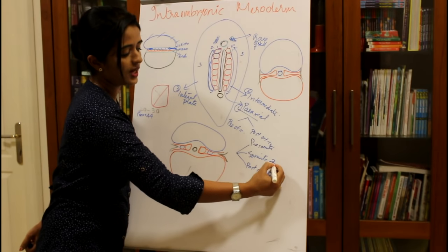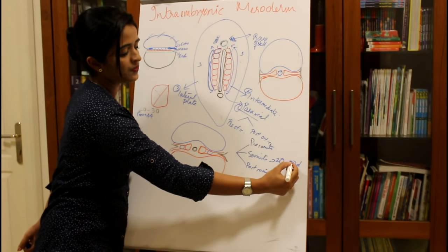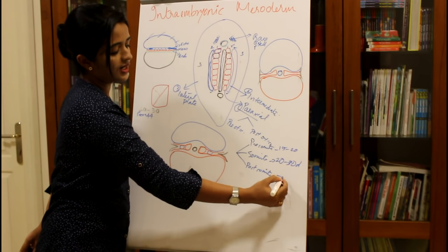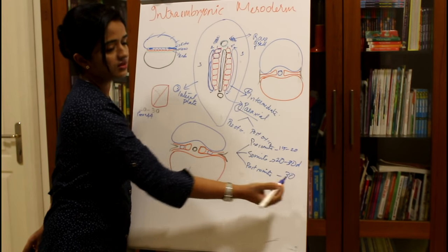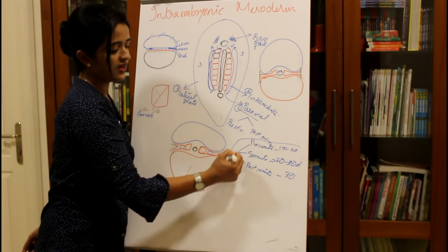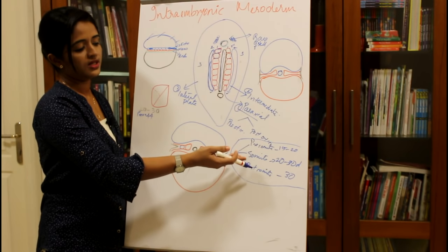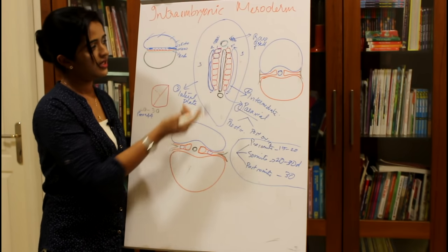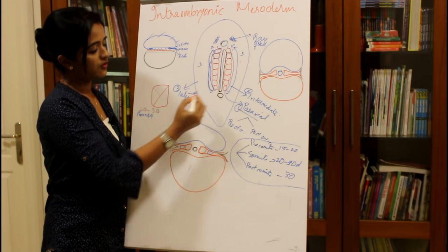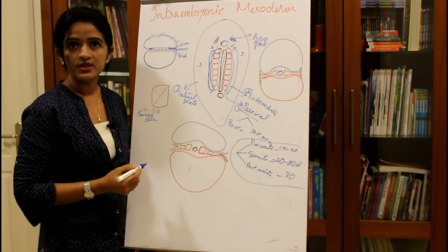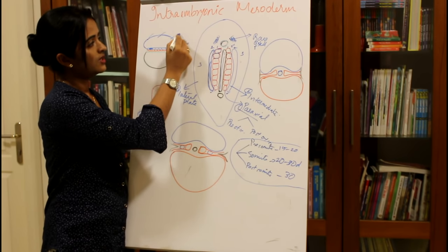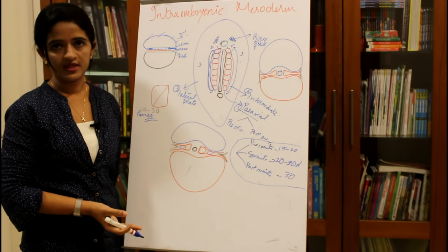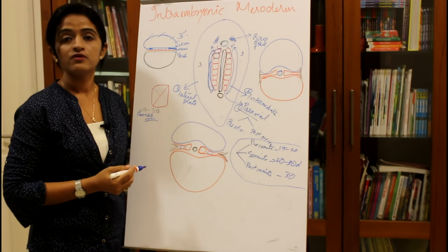Somite formation occurs between 20 to 30 days of intrauterine life. The pre-somite period spans 15 to 20 days, and the post-somite period is after 30 days. The trilaminar germ disc forms in the third week, and somites develop in the fourth week. By the end of the first month, up to 44 pairs of somites are present.